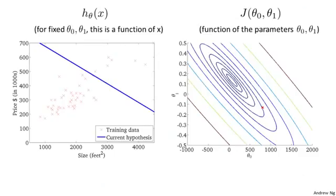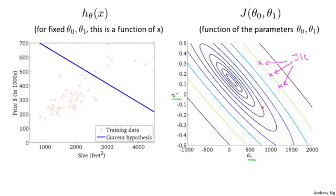Here's an example of a contour figure shown on the right, where the axes are theta zero and theta one. Each of these ellipses shows a set of points that takes on the same value for j of theta zero, theta one. For example, take that point, that point, and that point — all three of these points drawn in magenta have the same value for j of theta zero, theta one.